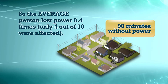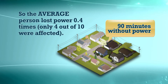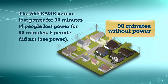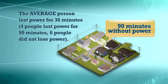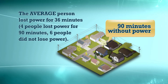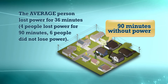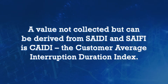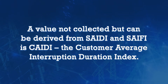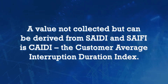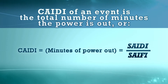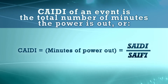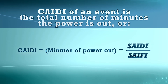So the average person lost power 0.4 times — only four out of ten were affected. The average person lost power for 36 minutes. Four people lost power for 90 minutes; six people did not lose power. A value not collected but can be derived from SAIDI and SAIFI is CAIDI, the Customer Average Interruption Duration Index. The CAIDI of an event is the total number of minutes the power is out, but can also be calculated by SAIDI divided by SAIFI.